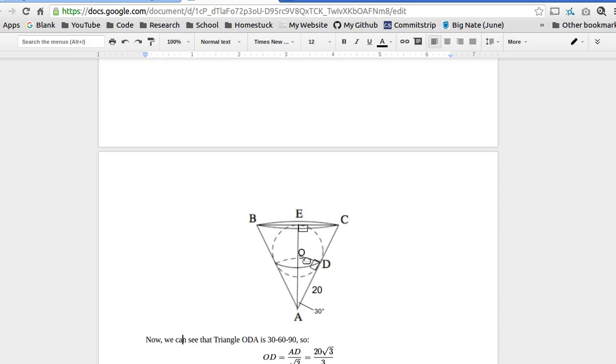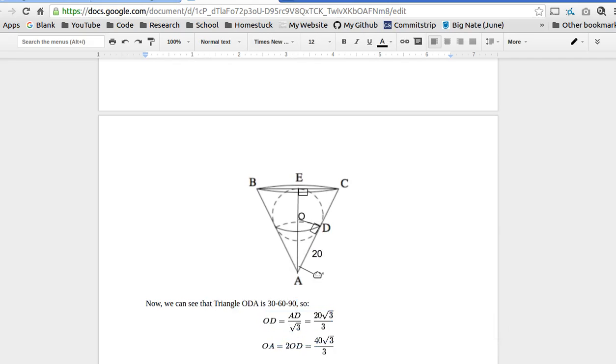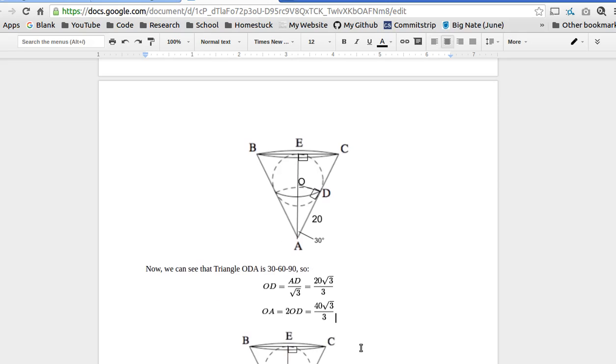So now we're just going to try to find these two sides, OD and OA, because those are the other two sides of the triangle. So OD is the side opposite 30. AD, which we know is 20, is the side opposite 60. So OD equals AD over radical 3, which is 20 square root of 3 over 3, since that's how 30, 60, 90 triangles work. And OA is the hypotenuse, so it's 2 times the side opposite 30. So it's 2 OD, which is 40 square root of 3 over 3.